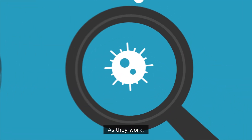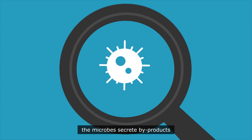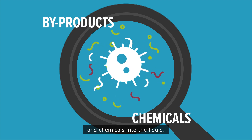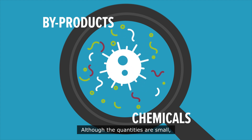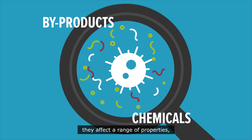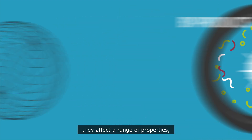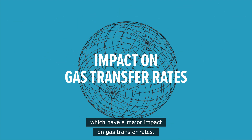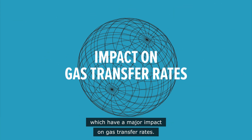As they work, the microbes secrete by-products and chemicals into the liquid. Although the quantities are small, they affect a range of properties which have a major impact on gas transfer rates.